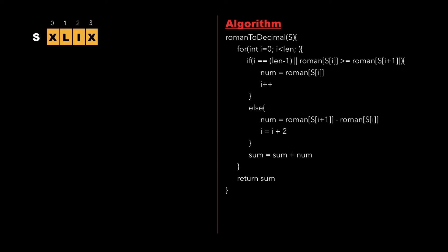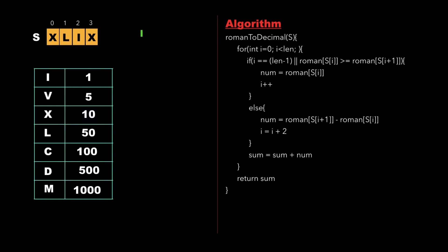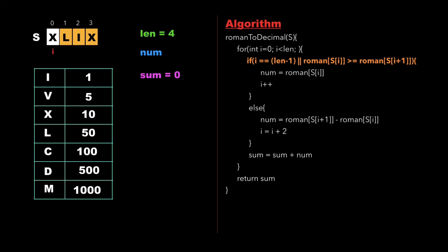Now let's look at our actual approach to solve this problem. Consider the string XLIX — the right side of the screen shows the algorithm, which is a function roman to decimal with argument string s. We create a hash map called roman where we store the corresponding symbol-to-integer values. We also declare a variable length for the length of the string, a variable num, and initialize sum as 0.